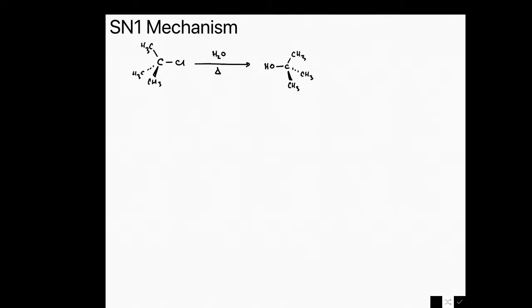So overall, we know that a substitution is taking place. If we look at the starting material, we're starting with tert-butyl chloride, in which the chlorine is delta minus and the carbon is delta plus.